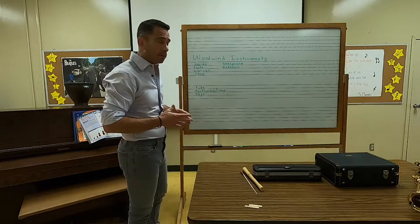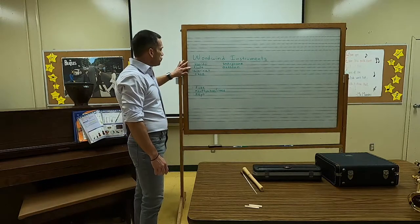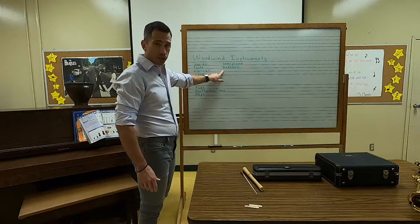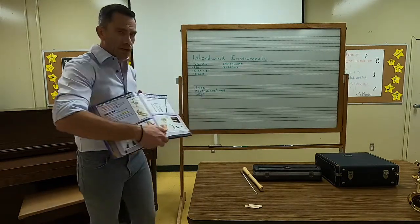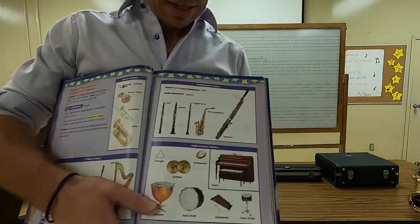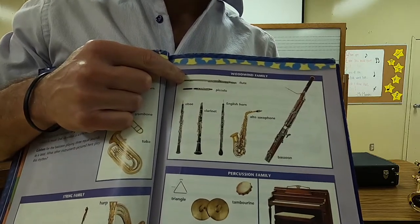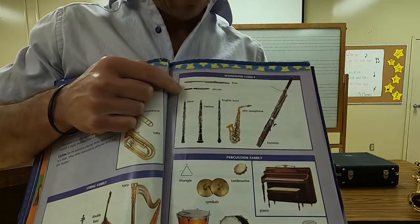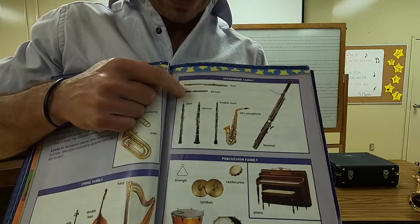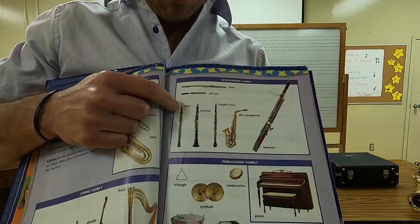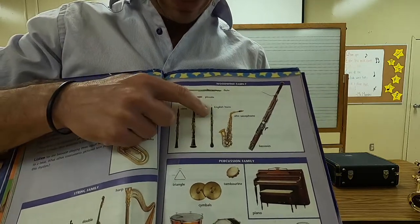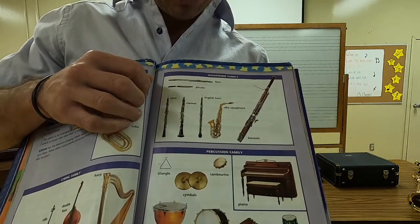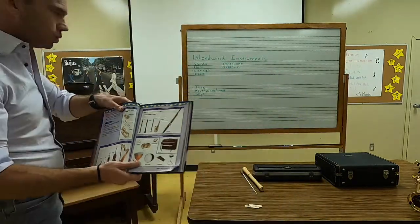A few of the instruments in the woodwind family are the recorder, flute, clarinet, oboe, saxophone, and the bassoon. I'll bring my little music book up here so you can see the woodwind family. Up top we've got the flute — it's the smallest, so it's going to be the highest pitched. Then you have a little flute called the piccolo, which means little, about half the size of the flute. Then we've got the oboe, clarinet, English horn, the saxophone, and the bassoon. You can see it's the biggest, so it's going to be the lowest pitched.